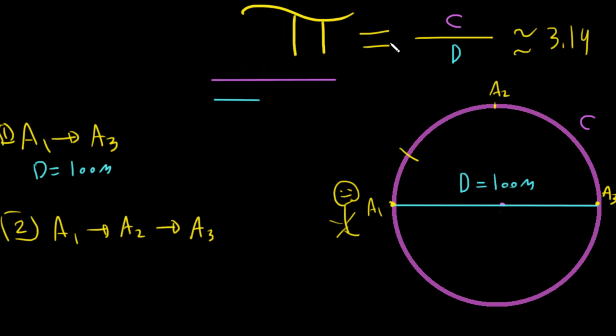C equals D multiplied by Pi. So if you want to multiply that, you will find C equals D multiplied by Pi.